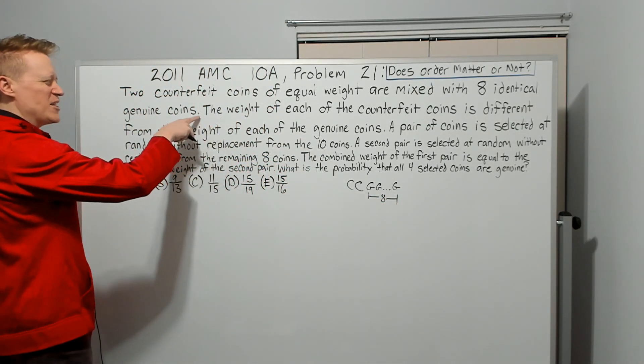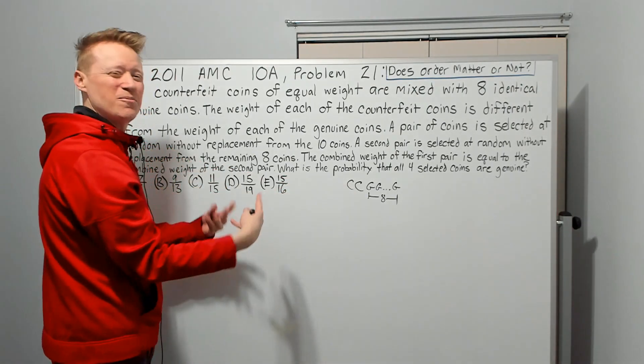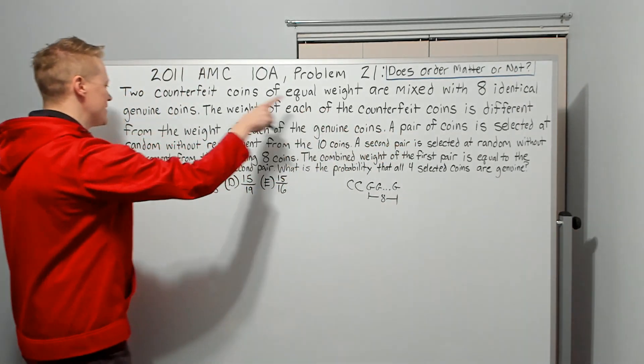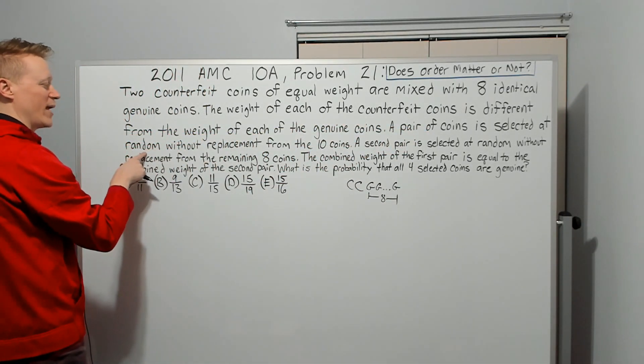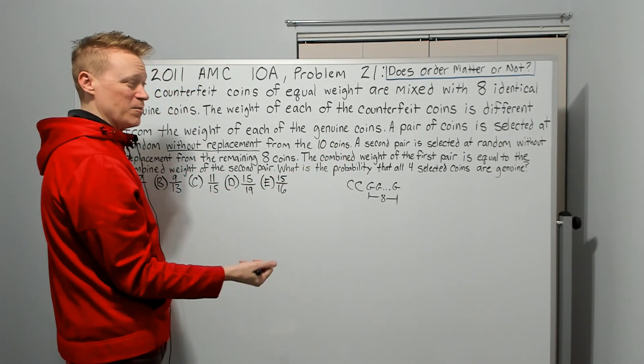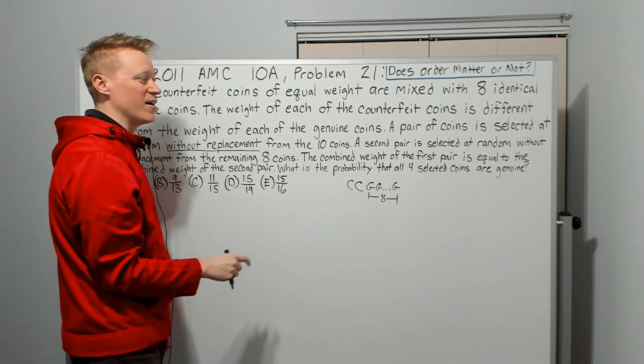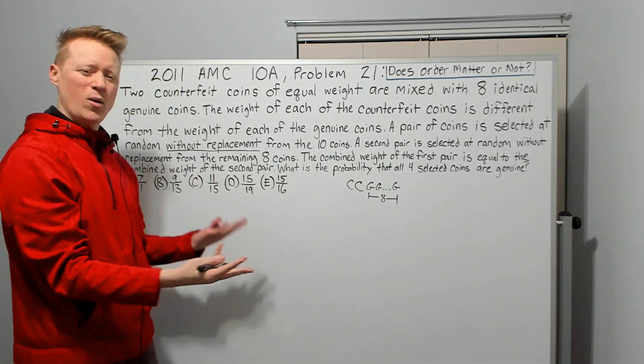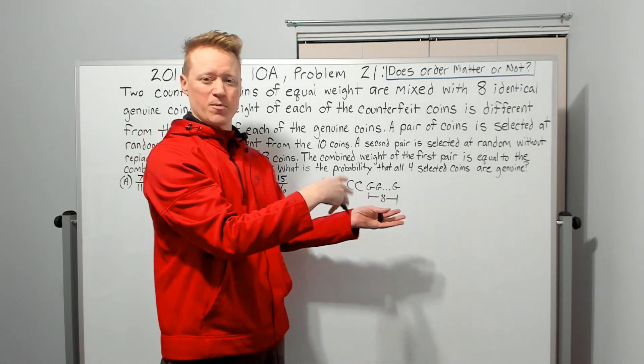I try to process what they're telling me when I'm reading. I do not read an entire problem and then ask how I'm going to attack it. I feel like I do much better when I kind of make sense of what I read as I read it. So that's kind of my personal strategy. The weight of each of the counterfeit coins is different from the weight of each of the genuine coins, so they're not equal weights. A pair of coins is selected at random without replacement from the ten coins. A second pair is selected at random without replacement from the remaining eight coins. The combined weight of the first pair is equal to the combined weight of the second pair.